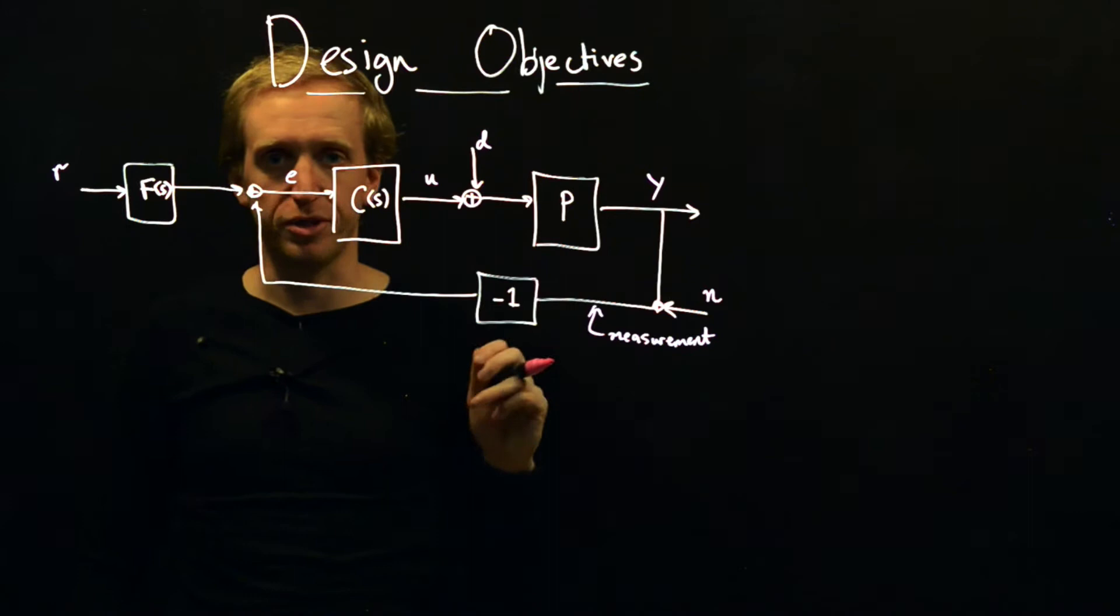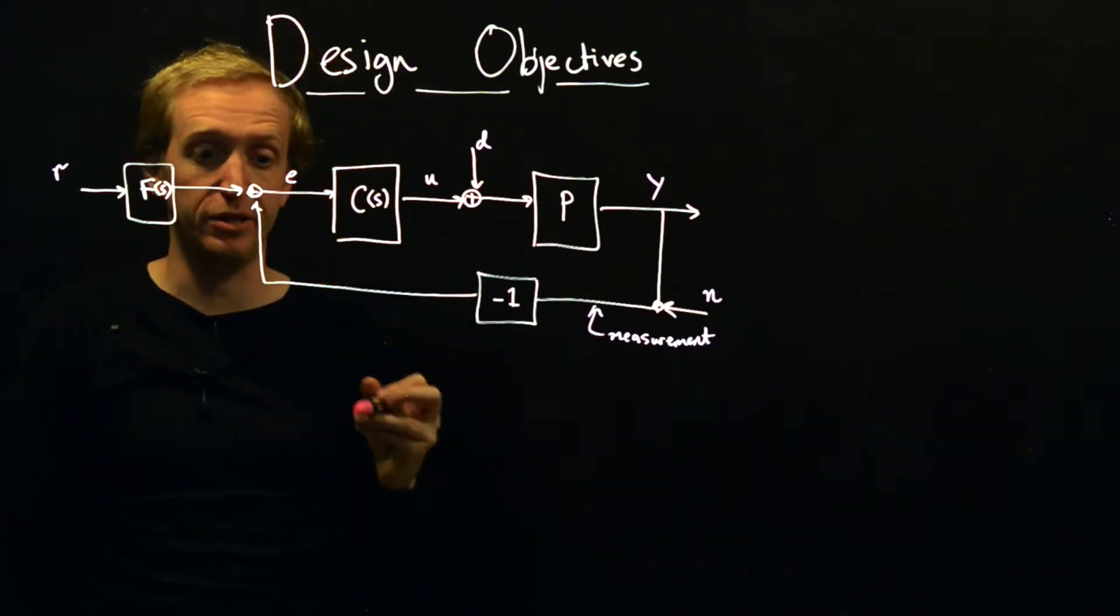This is sort of the standard setup. We've not said what this F is, this is a feed-forward controller. We're not actually going to be talking about that, we'll indicate what it's typically used for, but it's an important part of control system design. It's not a part we're going to really be talking about today. So this is the standard feedback control setup and what everything means.